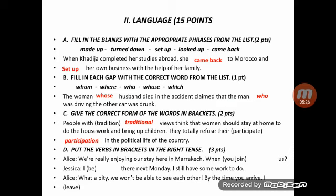Exercise D: put the verbs in brackets in the correct tense. Alice says: 'We are really enjoying our stay here in Marrakesh — when will you join us?' Jessica replies: 'I'll be there next month.' Next month is an adverb of time expressing the future, so we use will plus bare infinitive.